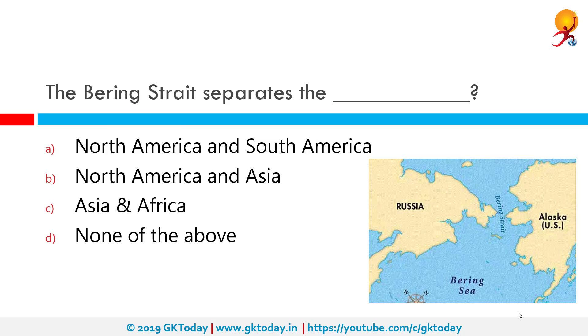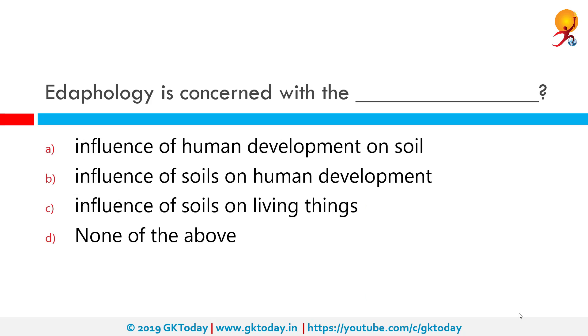The Bering Strait separates the North America and Asia continents. It basically separates Russia from Alaska, as you can see in the image.